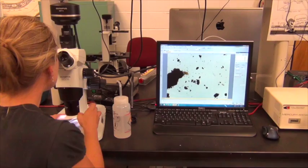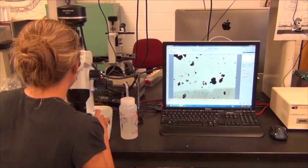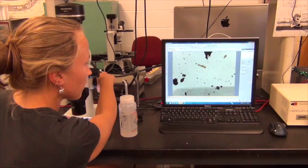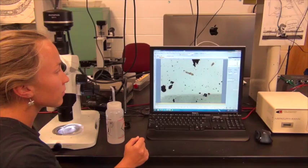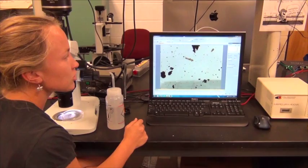That's a springtail. The springtail's spring is called a furca. You can't see it on this one. We could try to turn them over. But springtails, even though they look a lot like mites, they're more closely related to insects. They're hexapods, so they have six legs. And they have two little antennae here, which mites don't have.